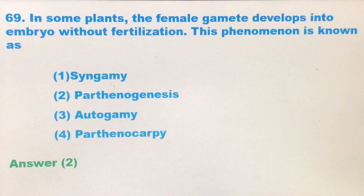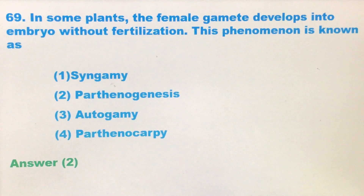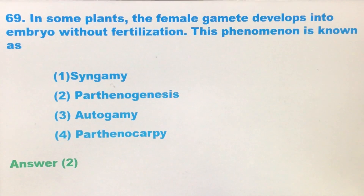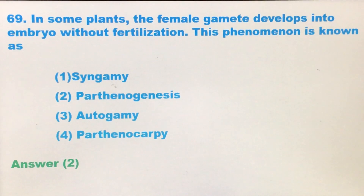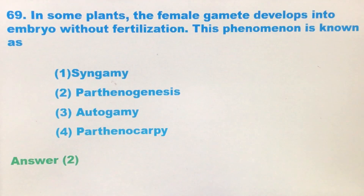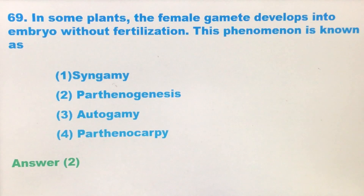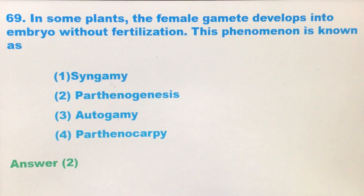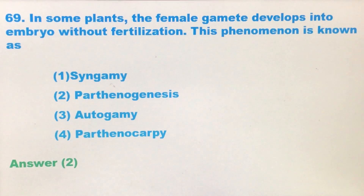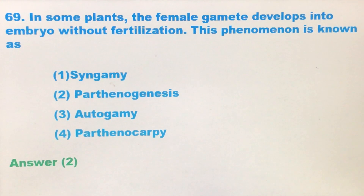Now what is autogamy? Autogamy is a self-pollination process — that is, the pollen grain of the same flower is transferred to the ovary in the same flower. That is autogamy.